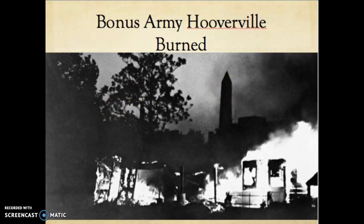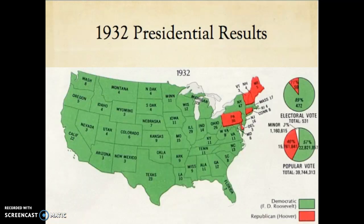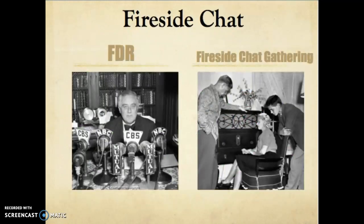The way Hoover handled the situation was not ideal. Here you can see the Washington Monument in the background — this is the aftermath. The way he dealt with the Bonus Army stained Hoover's reputation, and his re-election in 1932 was doomed. This happened only five months before the presidential election. In 1932, Roosevelt — shown here in green — a Democrat, completely beat Herbert Hoover in a landslide victory. The Democrats also took both houses of Congress, controlling the Senate and the House of Representatives.